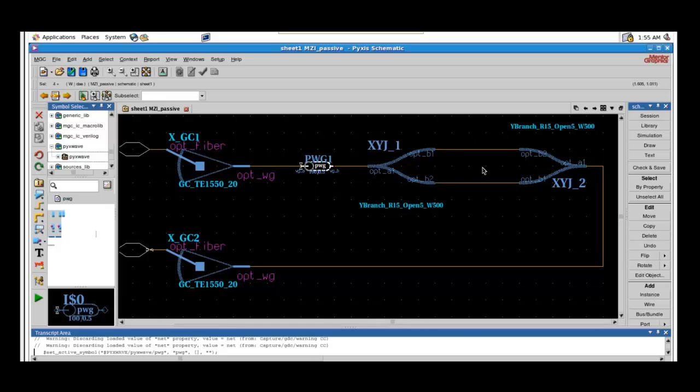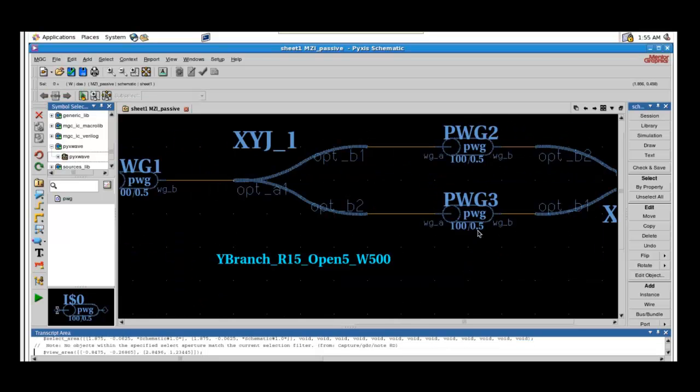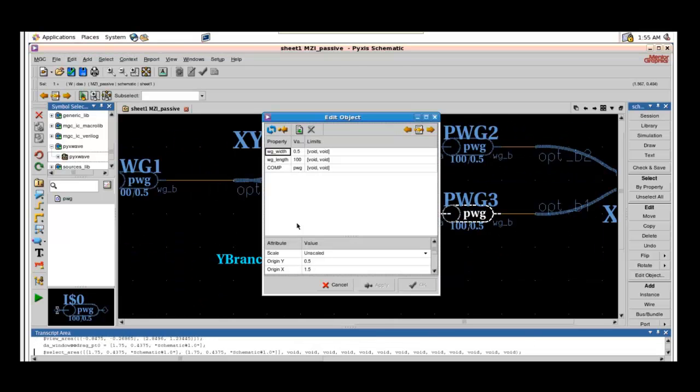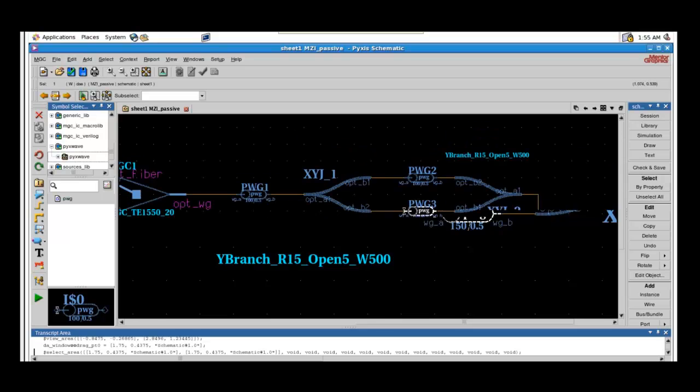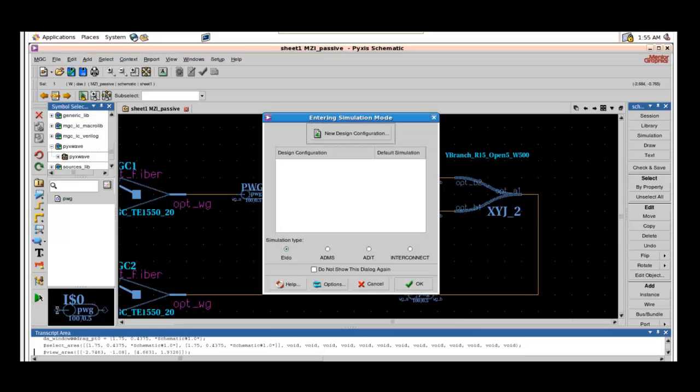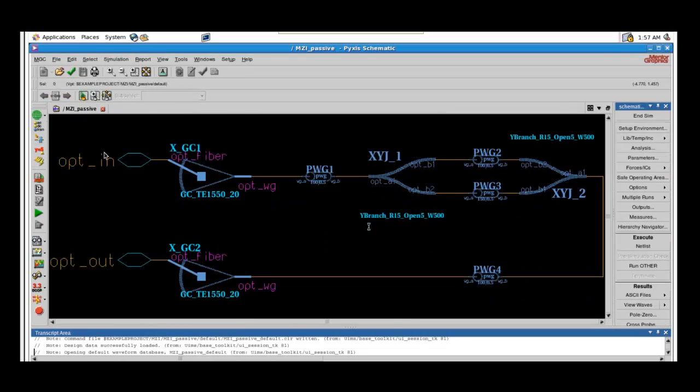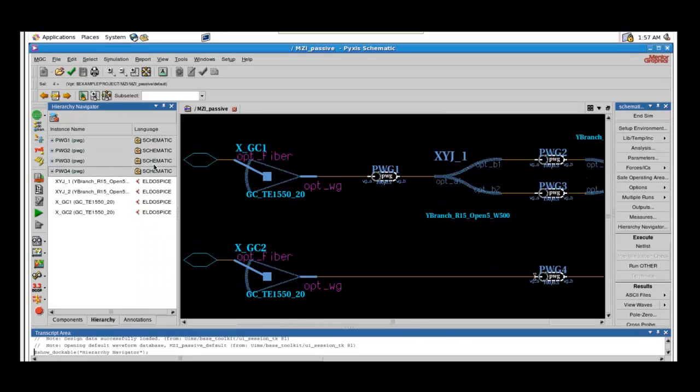Next, we add the waveguide components to our schematic layout. We then enter simulation mode and select InterConnect. We'll also select an EldoSpice type model and finish setting the simulation parameters.